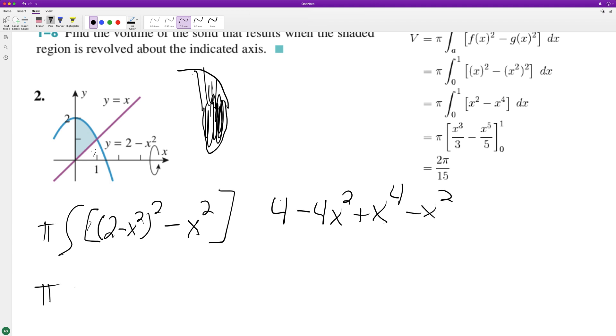So we end up with minus 5x. So now I'm integrating 4x minus 5x cubed over 3 plus x to the 5th over 5. And we're going from 0 to 1.